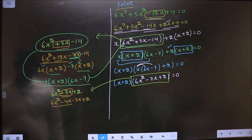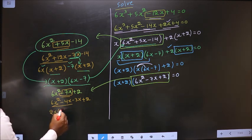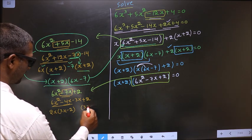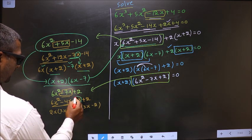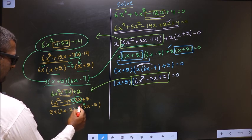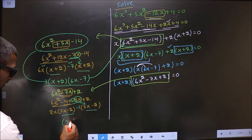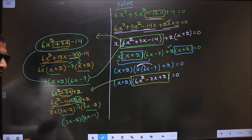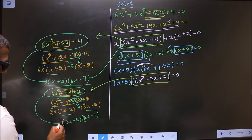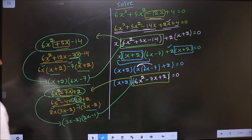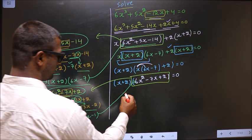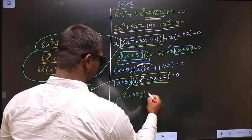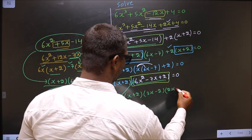What can you take out common from these 2 terms? It is 2x. So here you get 3x and here you get minus 2. Whatever you have got here, here also you should get the same thing. From this, 3x has gone inside, so outside you are left with minus 1. Take out 3x - 2 outside, so here you have 2x and here you have minus 1. In place of this quadratic, replace this over here. So let us replace: x + 2, times 3x - 2, times 2x - 1 = 0.